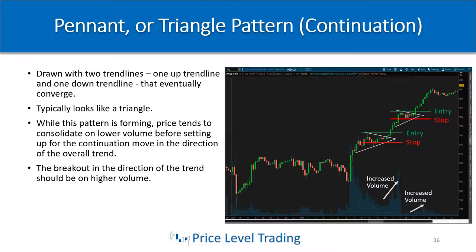You can see that when price stalled and consolidated, another pennant pattern formed again before we broke out higher. If you missed the first one, you could take the second pennant pattern breakout, or if you're still in the first trade, you could potentially add to it and move your stop up appropriately. This was an overnight trade on the second breakout, and volume increased again to the upside confirming the direction.